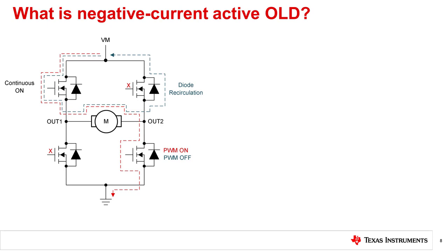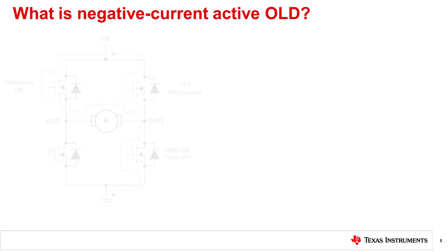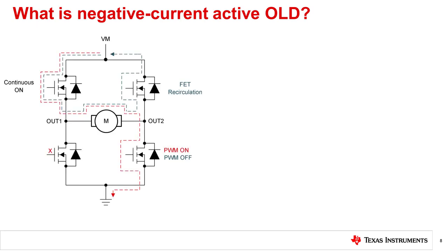Negative current during recirculation can flow either through the body diode of a FET or the FET itself, depending on whether the channel is configured for asynchronous or synchronous rectification. Negative current active OLD mode prevents false OLD flags that occur when recirculating current flows through the recirculation FET during synchronous rectification.